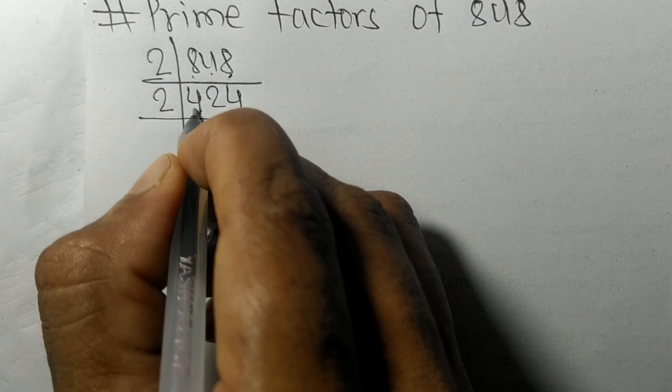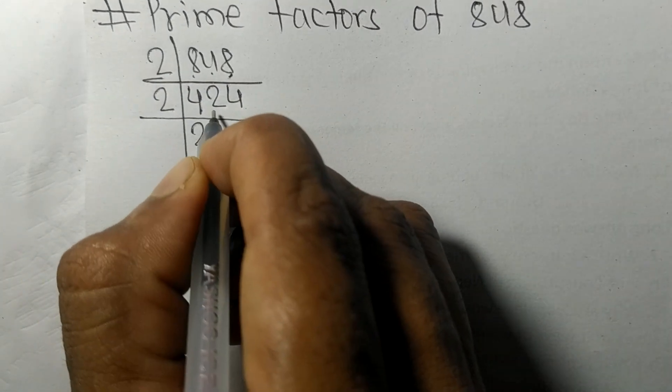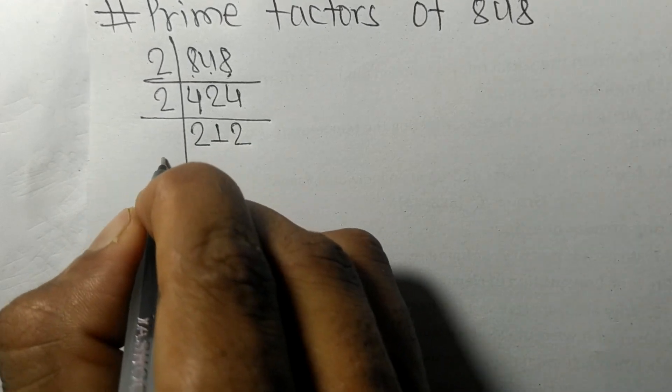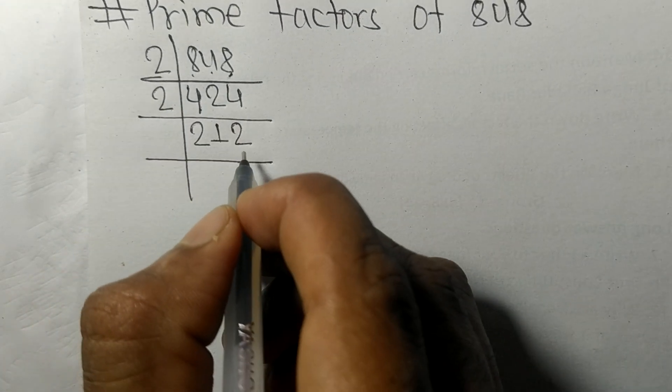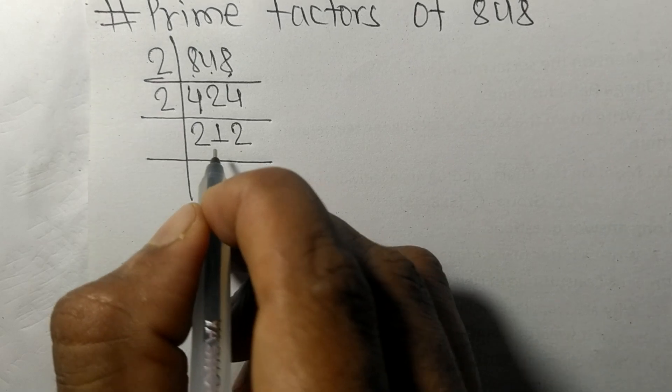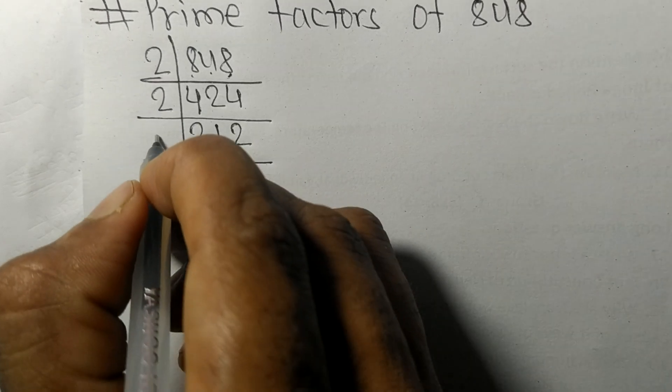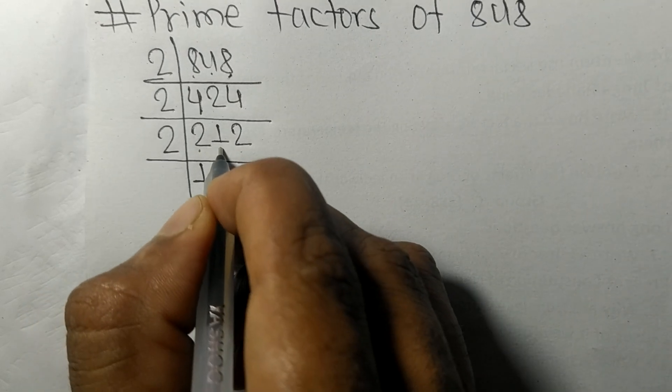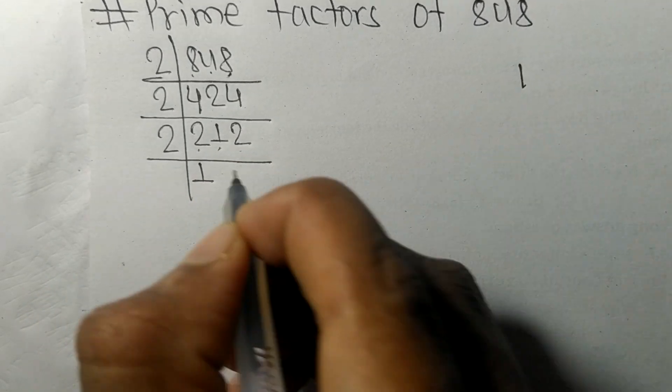2 times 2 is 4, 2 times 1 is 2, 2 times 2 is 4. Again we have even number 2 at last, so it is divisible by 2. 2 times 1 is 2.